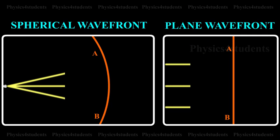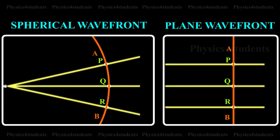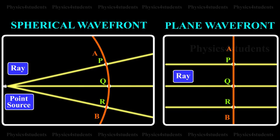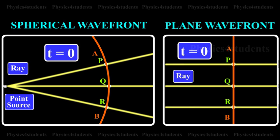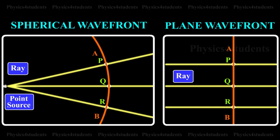Huygens's Construction for a Spherical and Plane Wavefront is shown in the animation. Let AB represent a given wavefront at a time T equals 0. According to Huygens's Principle,